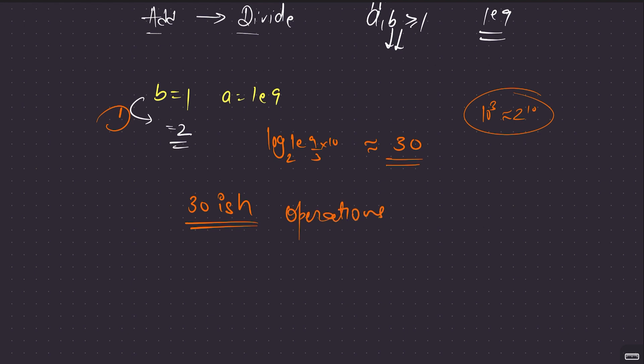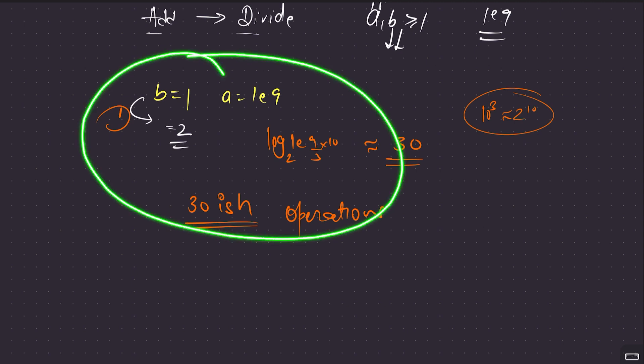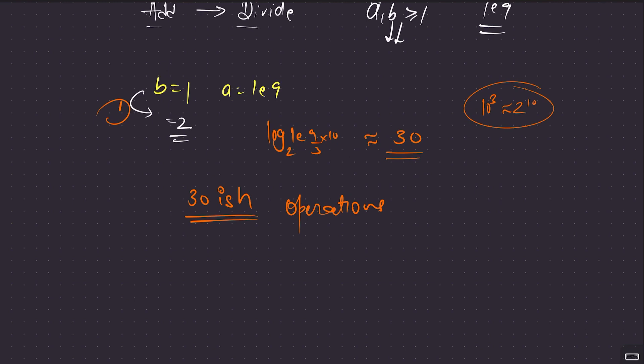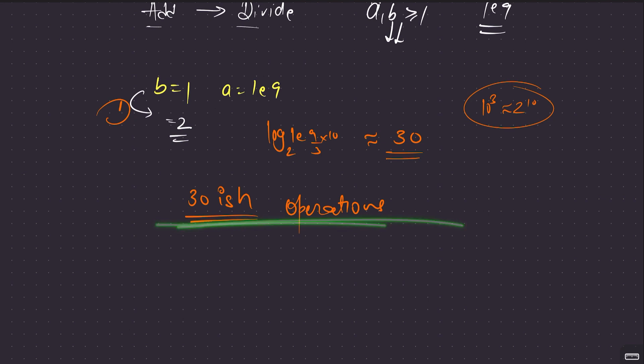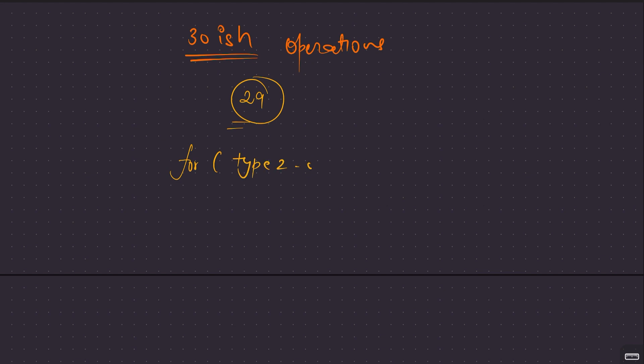This is not necessarily optimal — I haven't minimized yet. But the key insight is: type 2 operations won't be needed more than about 29 times. So we can simply run a loop applying type 2 operations from 0 to 30 times. That's a very small loop, since we know the bound.